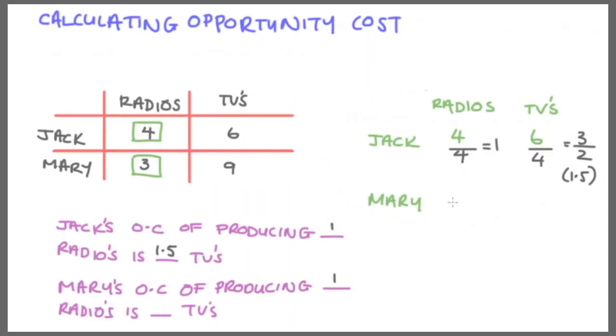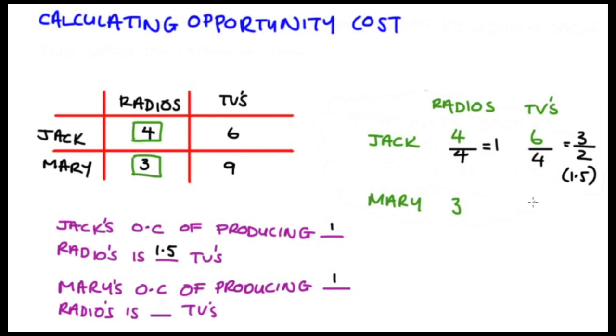I can do the same thing with Mary. I've got her opportunity cost of three radios—that's nine TVs. But if I want just Mary's opportunity cost of one radio, how do I make three into one? Divide by three. But I have to make sure I do it to the other side to preserve that ratio, so nine divided by three is three. So Mary's opportunity cost of producing one radio is three TVs.